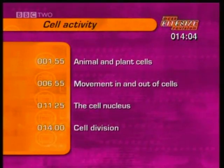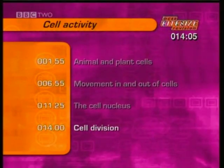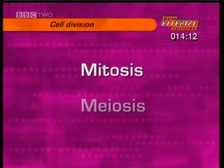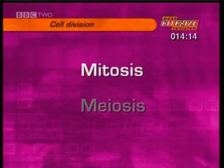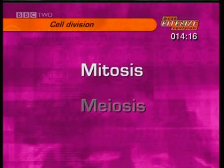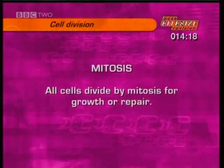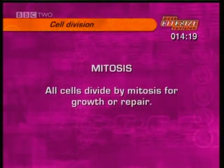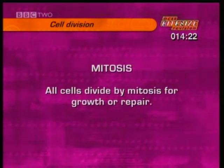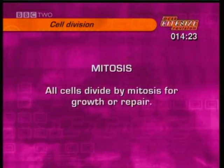This section is about cell division. There are two kinds of cell division: mitosis and meiosis. Mitosis is how all cells divide for growth or repair.